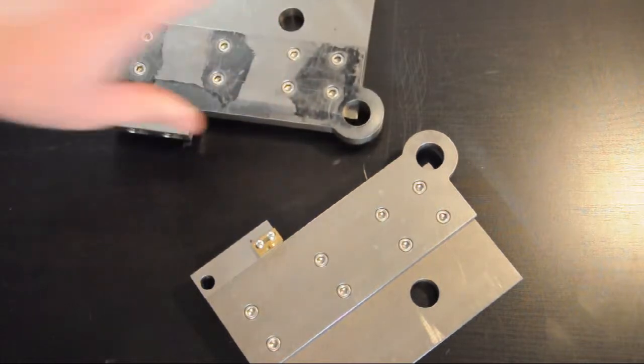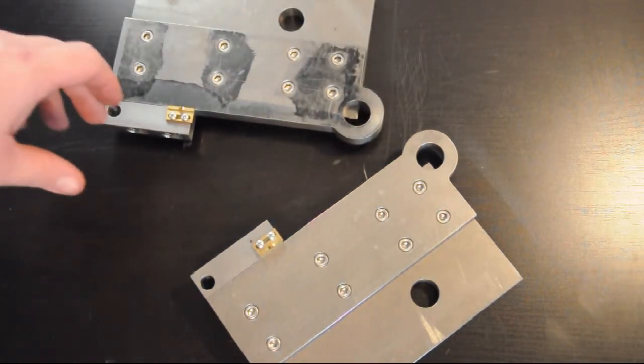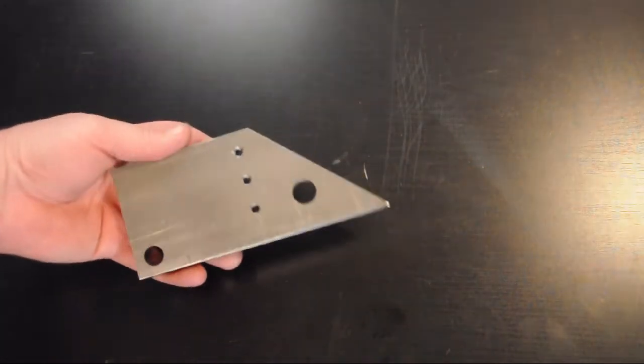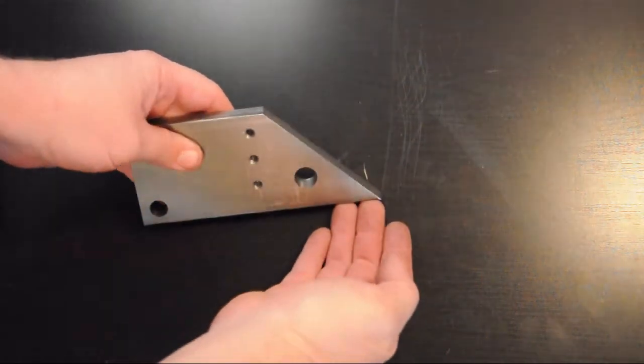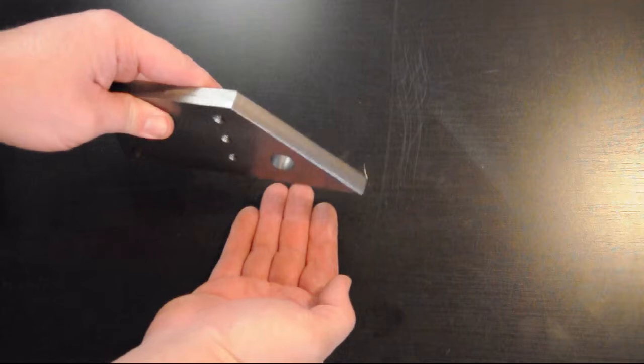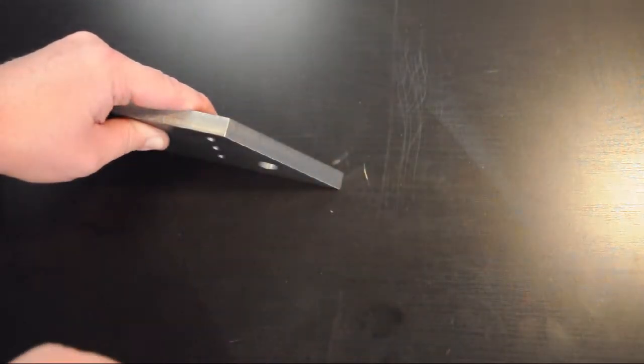They're pretty much done. We'll just do some final deburring on them and that will be that. Next we have the side component of the upper assembly. The sheet metal will be clamped under this part, and the fingers will be mounted along the plane here.